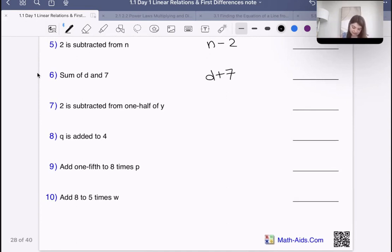Number seven says two is subtracted from one-half of y. That means we have one-half of y first, or y over two. Then two is subtracted from one-half of y, so we subtract two as well. It's y over two because that's half of y, and then we subtract two.